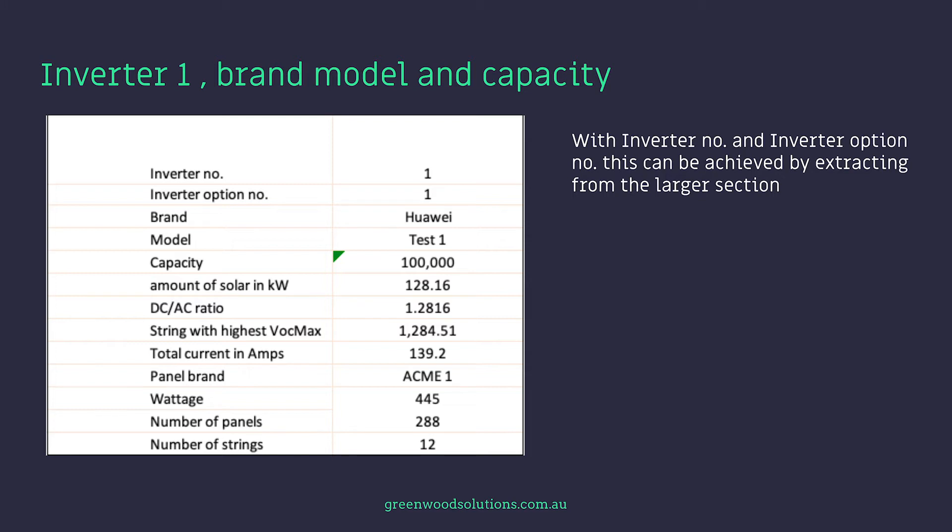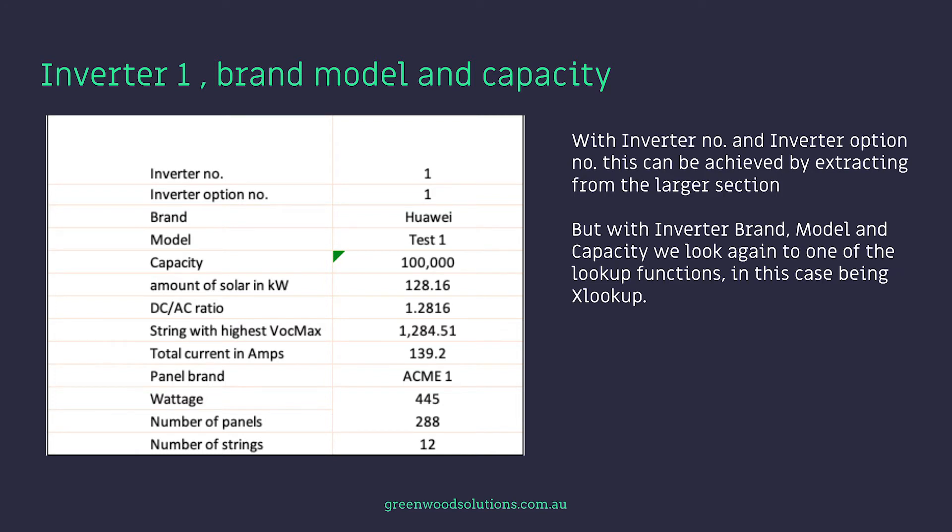With the inverter number and inverter option number, this can be achieved by extracting from the larger section. But with inverter brand, model, and capacity, we look again to one of the lookup functions — in this case XLOOKUP. I've used XLOOKUP on many occasions, and it has largely replaced VLOOKUP, HLOOKUP, and other lookup functions from previous iterations of Excel. XLOOKUP has the remarkable ability to look to the left and to the right, and is a lot more versatile.